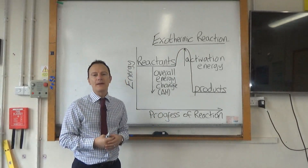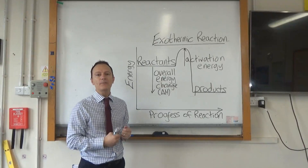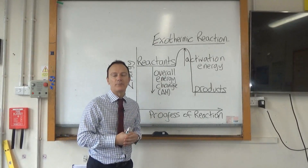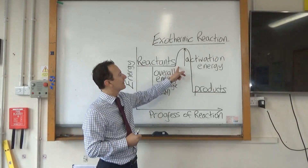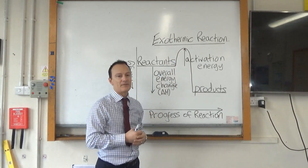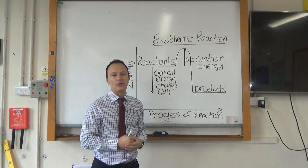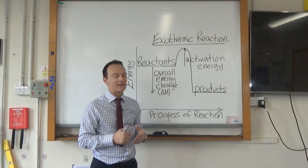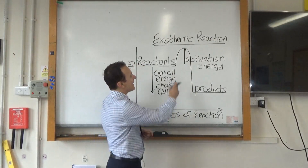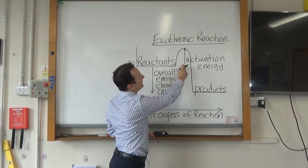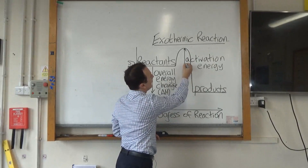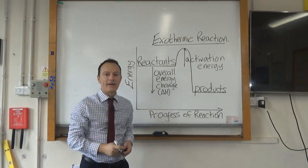You also need to be able to label these reaction profiles. The first label is the activation energy — remember, it's the energy needed to break those bonds in the reactants. It starts at exactly the same level as the reactants and goes right up to the very top. Don't make the mistake I saw many times as an examiner, where people put the arrow somewhere without it being exactly at the same level — you wouldn't get a mark for that. It needs to start exactly where the reactants are and go all the way up to the top.